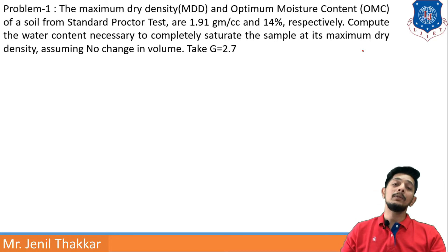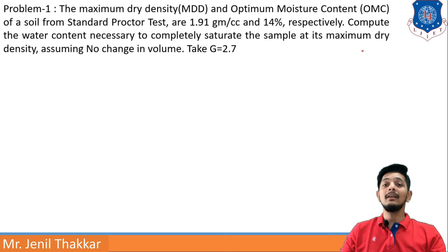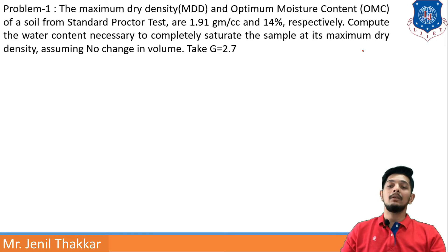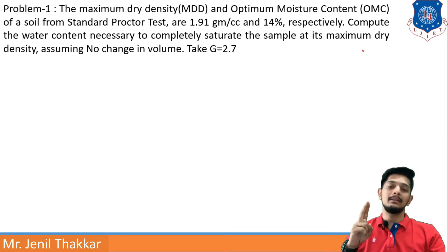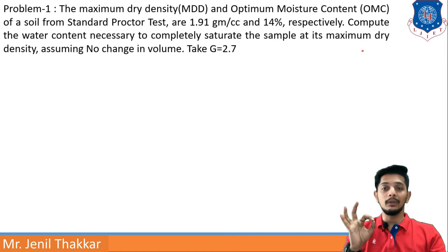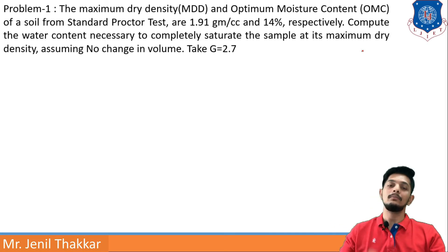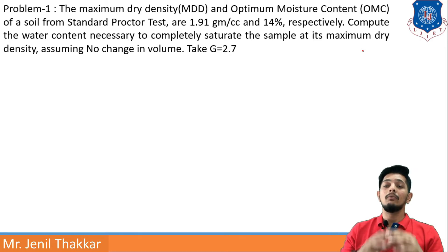First problem: the maximum dry density (MDD) and optimum moisture content (OMC) of a soil from a standard Proctor test are 1.91 g/cc and 14% respectively. So two things are provided — MDD = 1.91 g/cc and OMC = 14%.